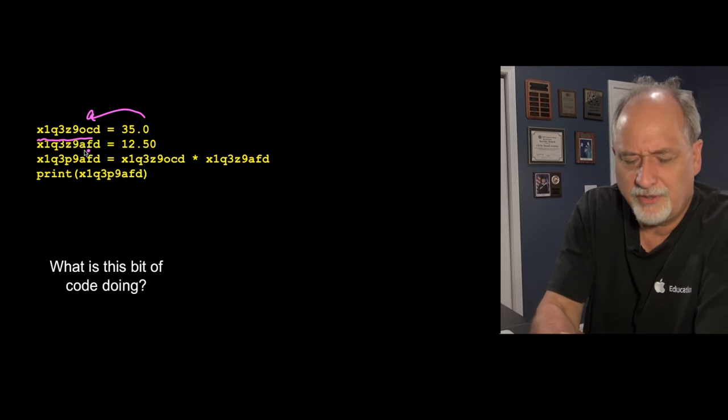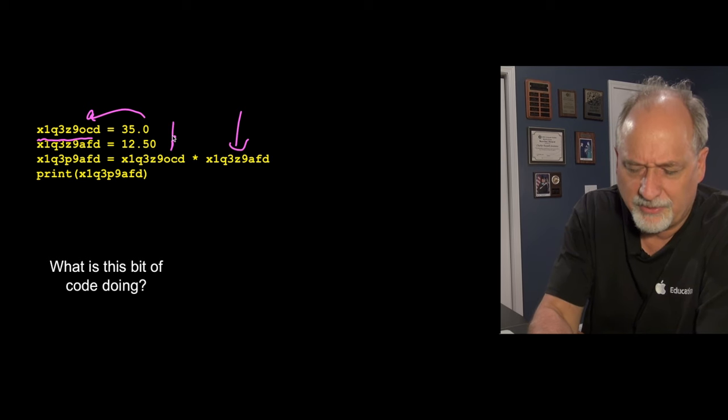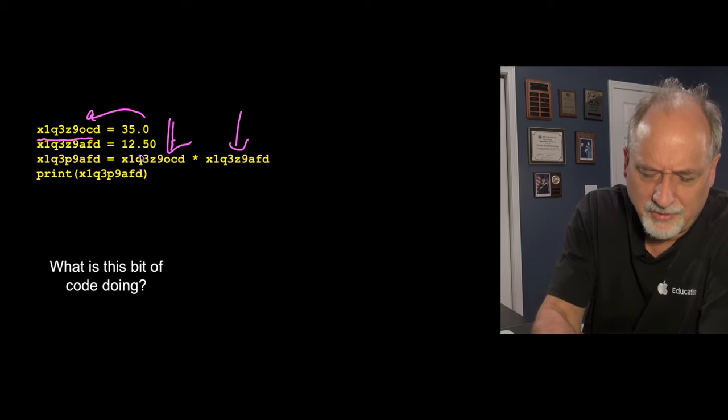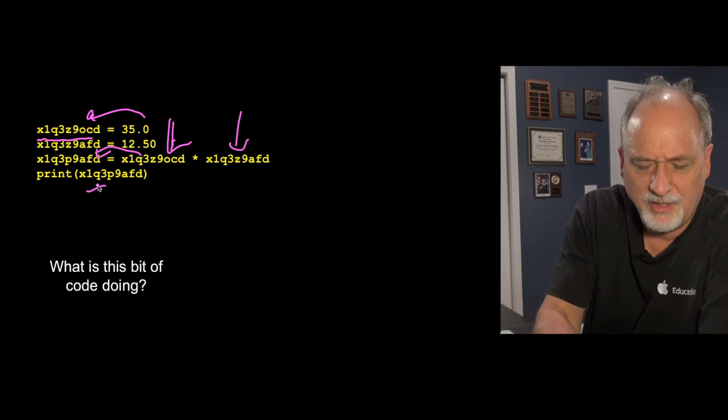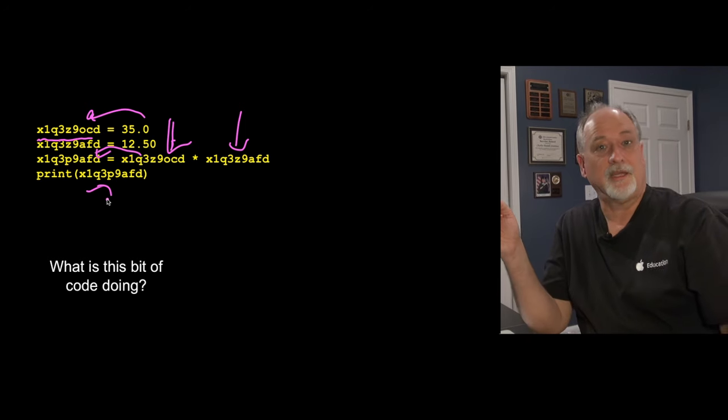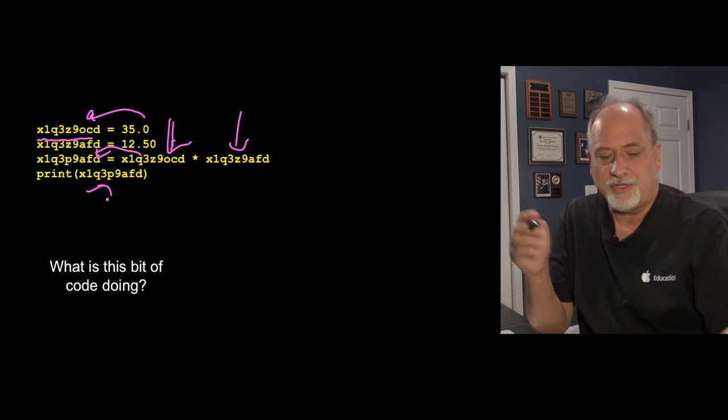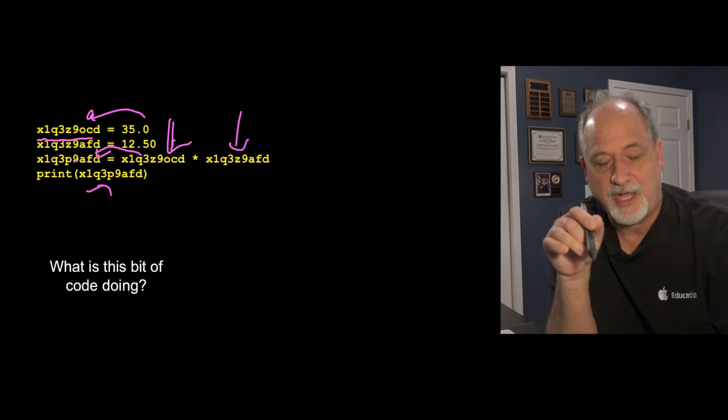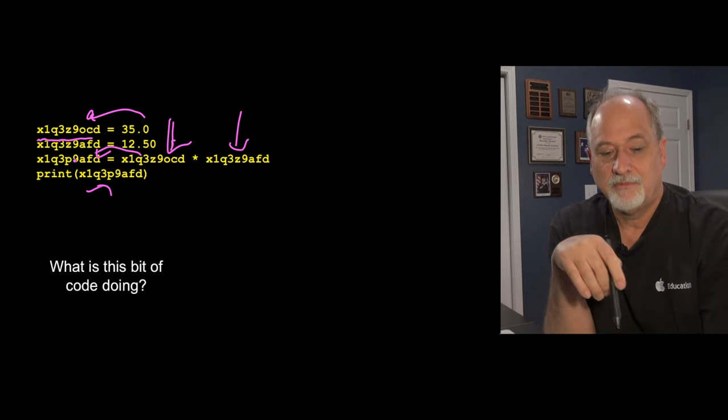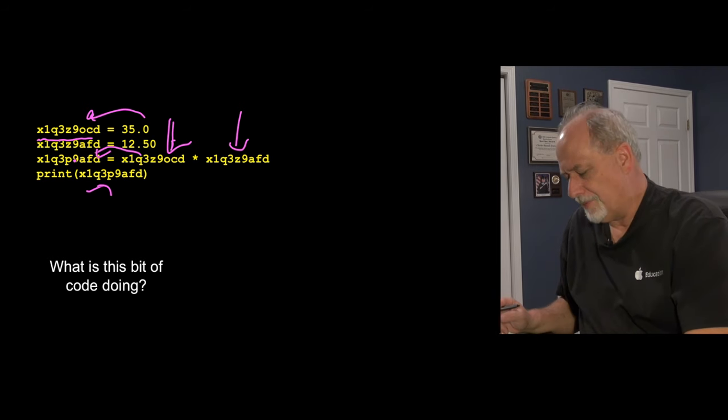And then we assign two variables, and then we're carefully pulling these two variables back out, multiplying them together, and sticking them into yet another variable, and then printing that variable out. That seems like we can figure out what it is. You just have to look really careful. And a single character mistake, and Python is going to be pretty unhappy.